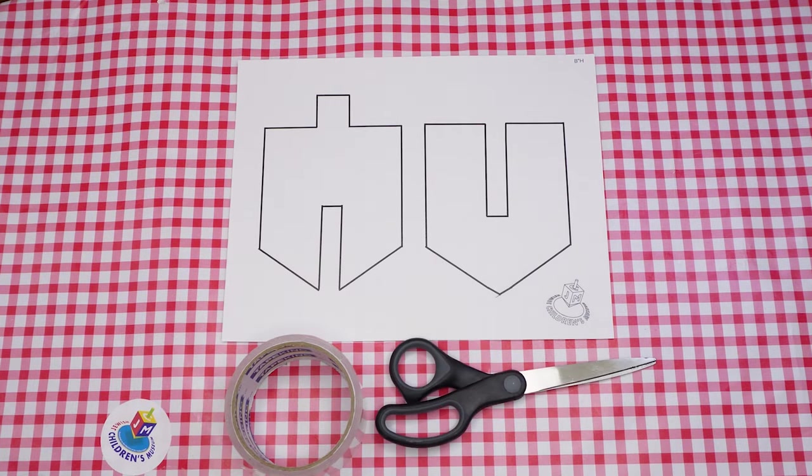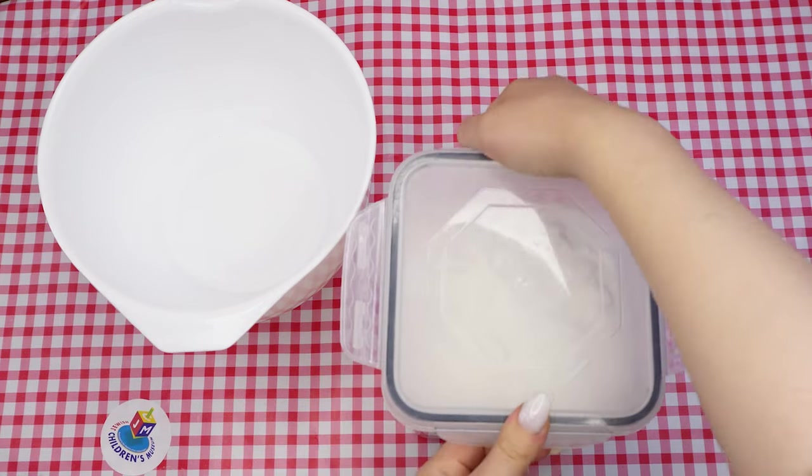Let's get started by preheating the oven to 350. Ask an adult if you need help. We will begin by making our dreidel dough.